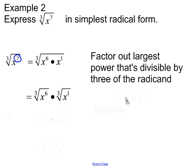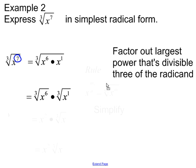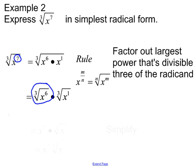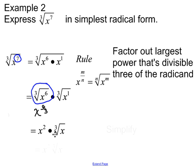Remember that rule from the previous video: x to the m/n is equal to the nth root of x to the m. We're going to use this rule to simplify. The cubic root of x to the 6th can be rewritten as x to the 6 over 3, which equals x squared. So we get x squared times the cubic root of x. Simplifying, our final answer is x squared times the cubic root of x.